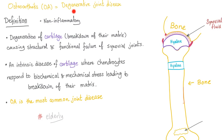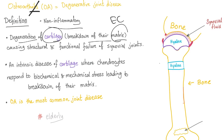Osteoarthritis is the same thing as degenerative joint disease — don't be fooled just because it ends in '-itis.' It is non-inflammatory. It involves degeneration of cartilage, breakdown of the extracellular matrix, and causes structural and functional failure of the synovial joint. It's an intrinsic disease of cartilage where chondrocytes respond to biochemical and mechanical stress leading to matrix breakdown.